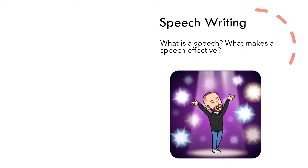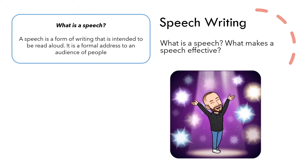So first of all, we need to consider what is a speech and what do we need to include within our speech in order to make them effective. A speech is a form of writing that is intended to be read aloud — it is a formal address to an audience of people. Essentially, when people carry out a speech, normally that is done in front of a crowd of people or an audience. However, you wouldn't be expected to do that for this writing task. You still need to pretend as though it is something that's going to be performed. It also says that it's formal, so you need to think carefully about what we mean by that.